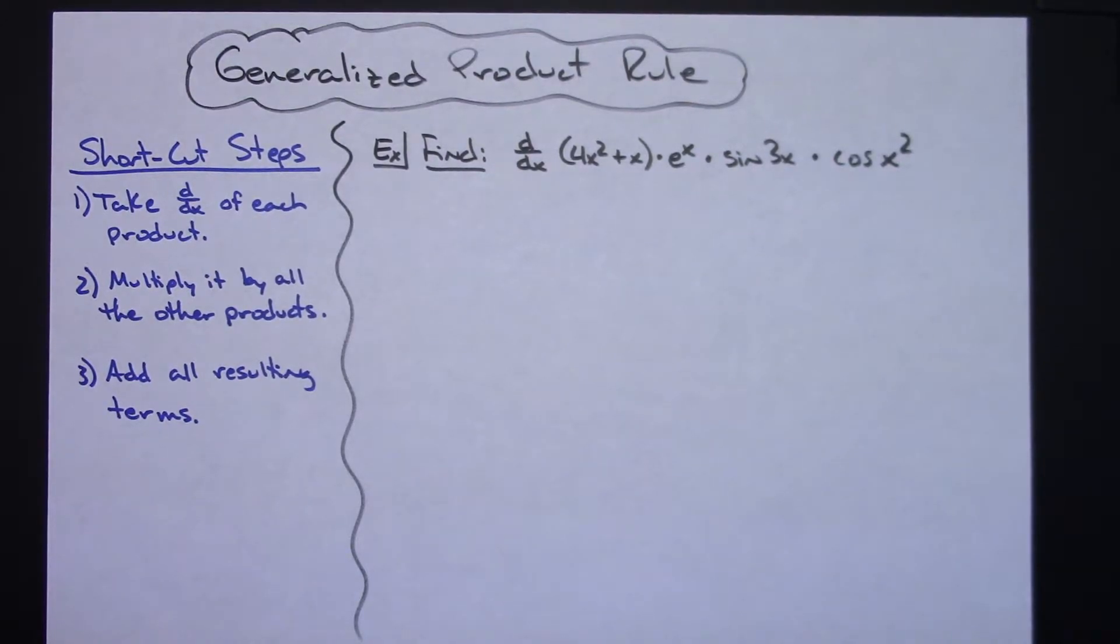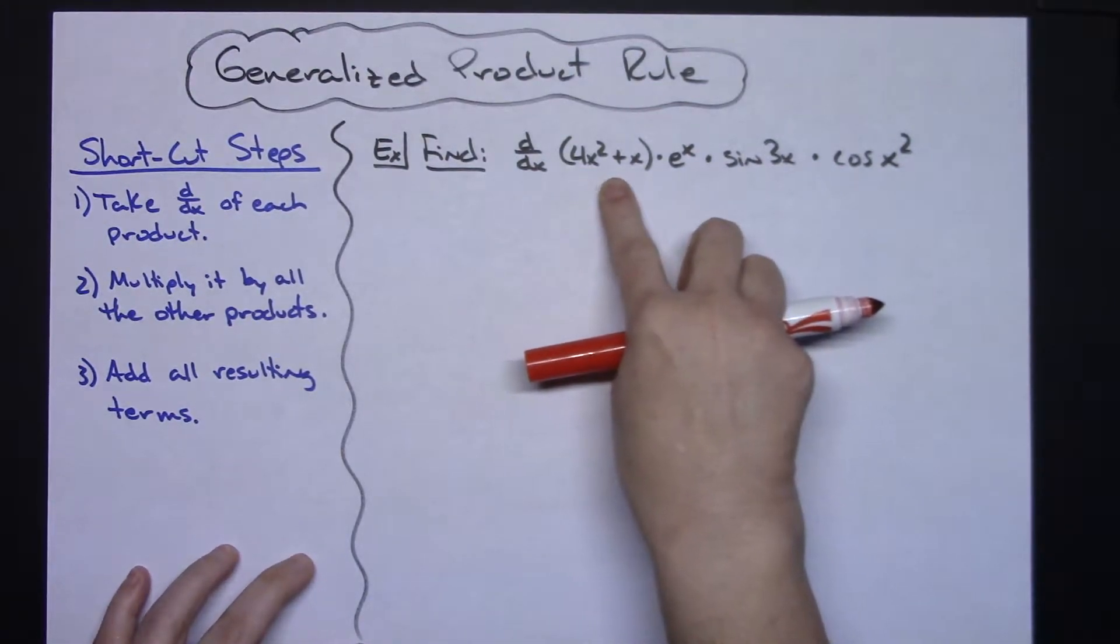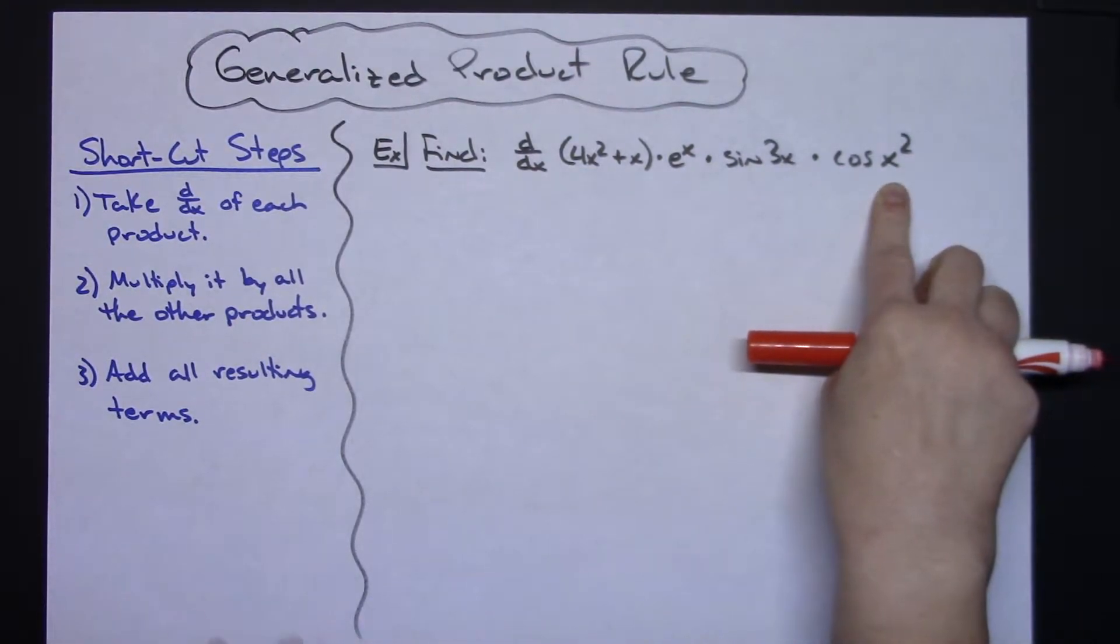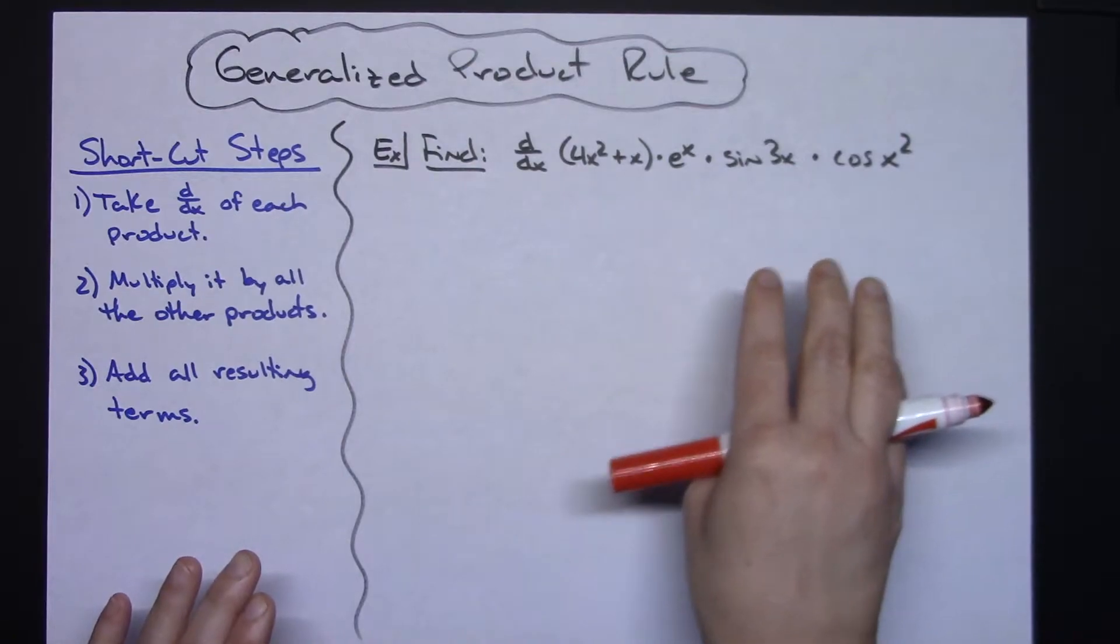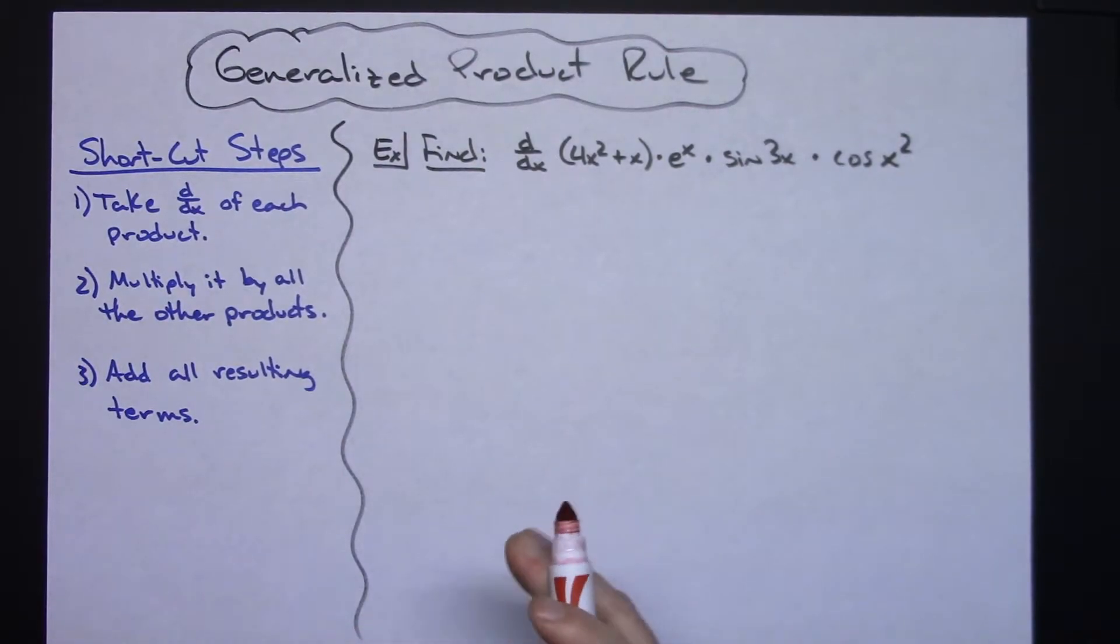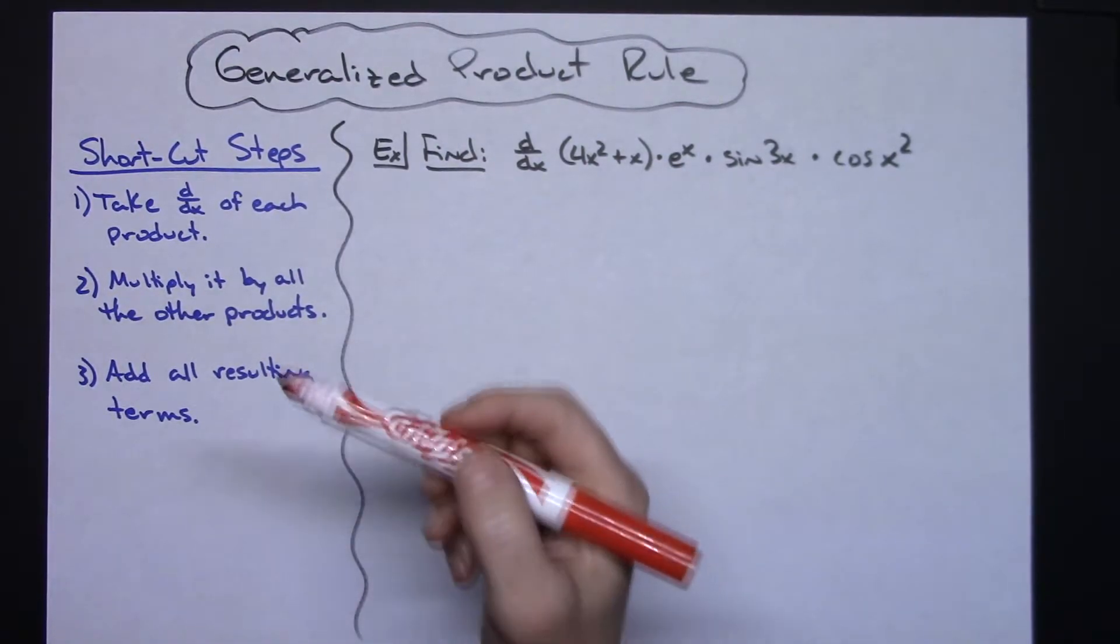In this video I want to take a look at a generalized product rule. Let's say you had to find the derivative of a great big long expression like this that had four individual terms or products that were being all multiplied together. It can be a long daunting task, but you can kind of generalize what you're doing and this will go a lot quicker here.